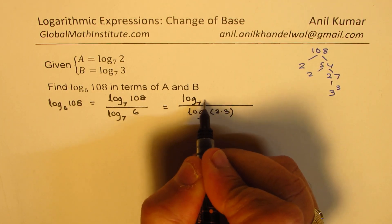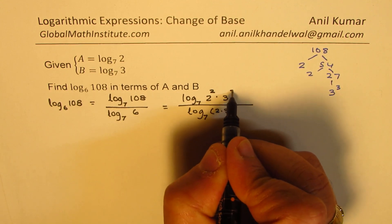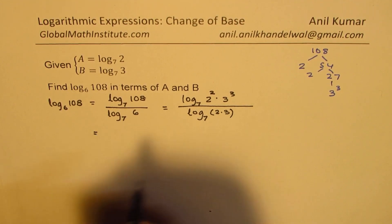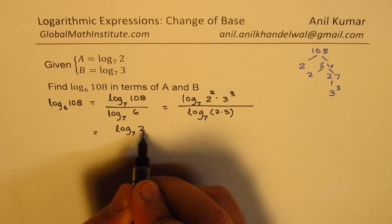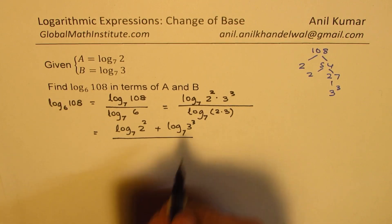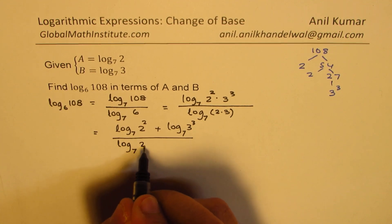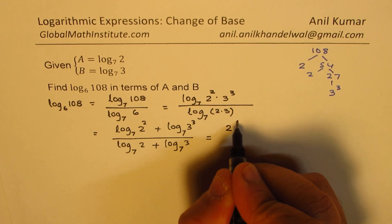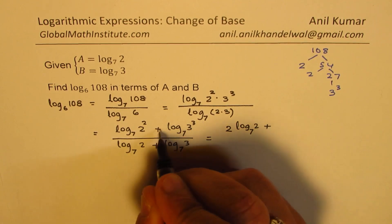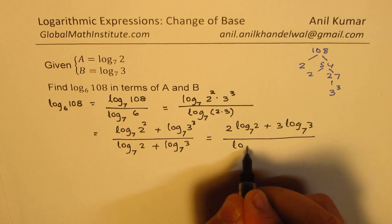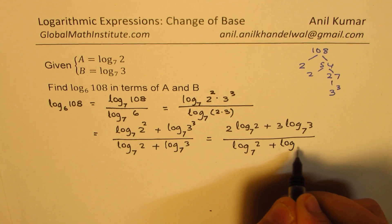So we get log base 7 of 2 squared times 3 cubed. We can use the product rule to write this as log base 7 of 2 squared plus log base 7 of 3 cubed, over log base 7 of 2 plus log base 7 of 3. Then applying the power rule, we get 2 times log base 7 of 2 plus 3 times log base 7 of 3, divided by log base 7 of 2 plus log base 7 of 3.